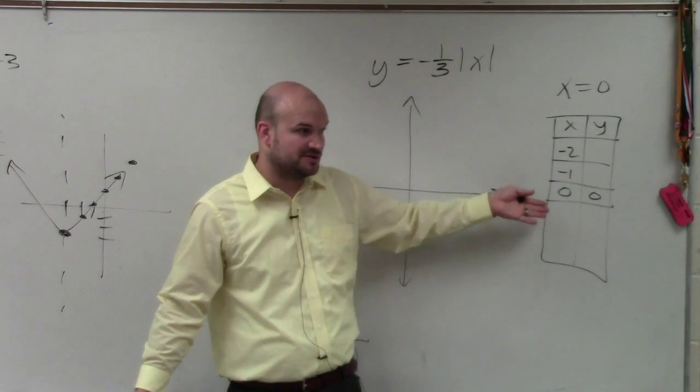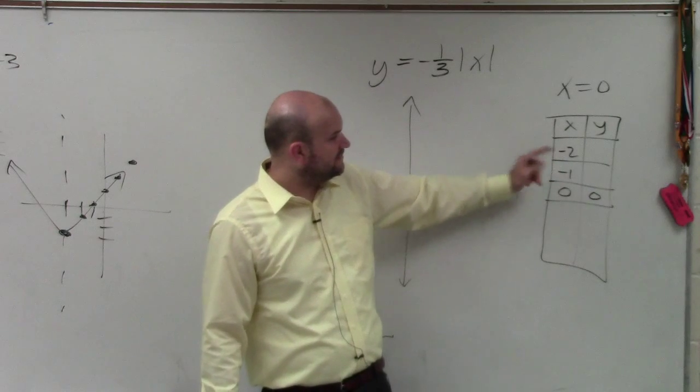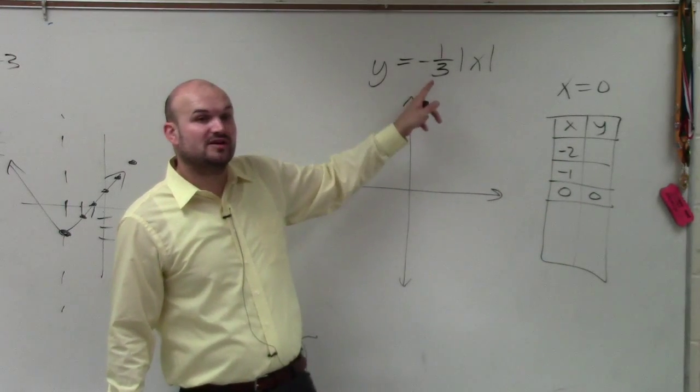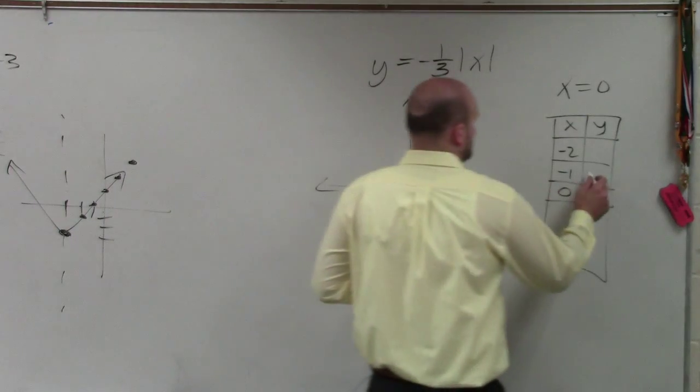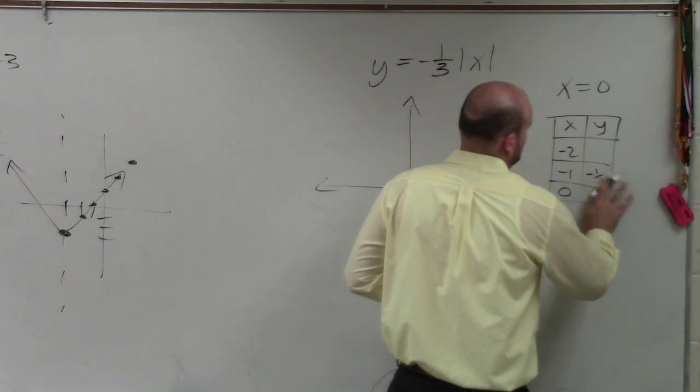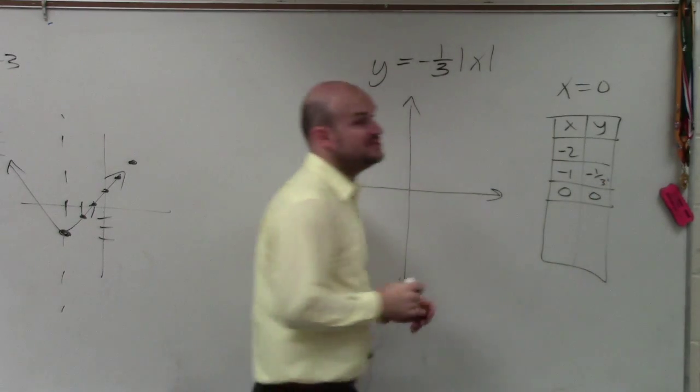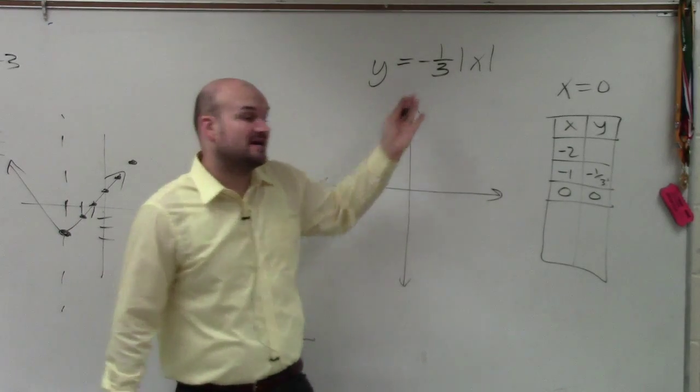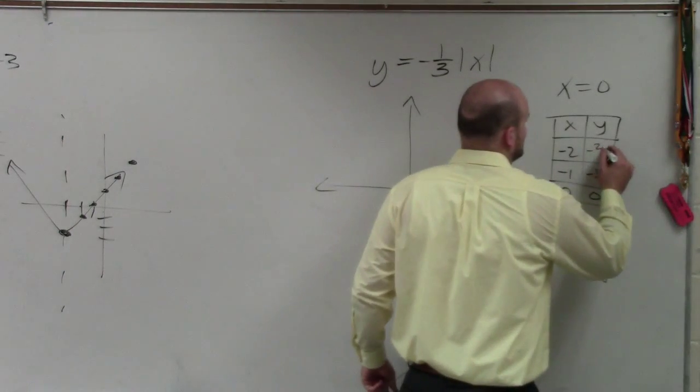But negative 1 and negative 2, if you plug in negative 1, absolute value of negative 1 is 1. 1 times negative 1 third is negative 1 third. If you plug in negative 2, absolute value of negative 2 is positive 2. 2 times negative 1 third is negative 2 thirds.